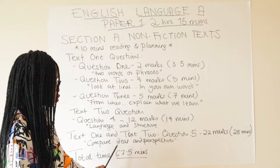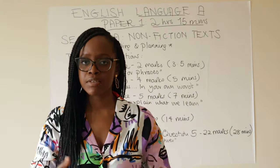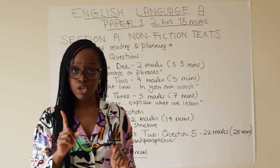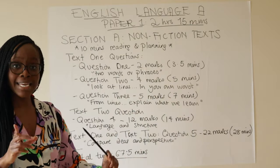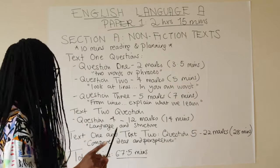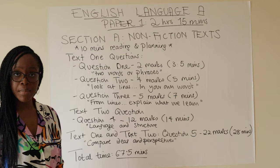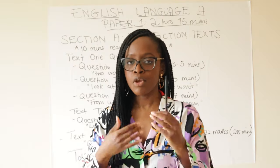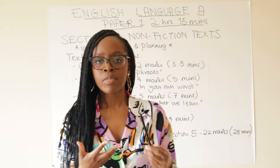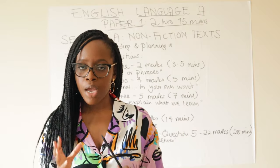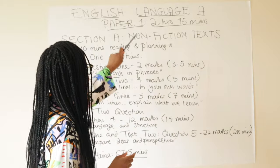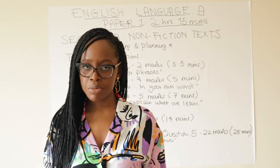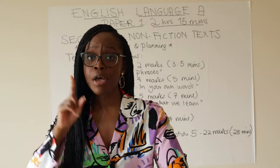For question five, the wording is always something like 'compare the ideas and perspectives of both writers on the theme explored in both texts.' In total, for Section A, you should allocate half of your two hours and 15 minutes — that's 67.5 minutes. If you have extra time, do the relevant maths to add your extra minutes. Remember: do not spend too much time on questions one to three; the bulk of your time goes to questions four and five.